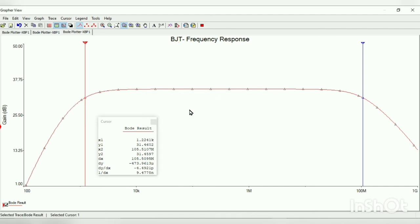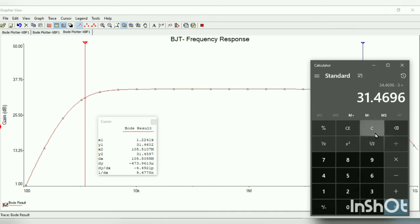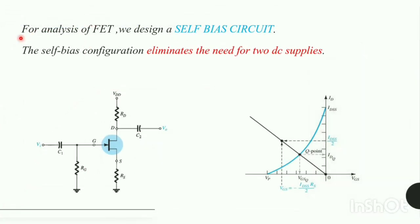Repeat the same for the next cursor. Now if you see, our low frequency is 1.2241 kHz and our high frequency is 105.5107 MHz. We know bandwidth equals high frequency minus low frequency. That is 105.51 minus - converting the kHz to MHz, we will get 0.0012. So we are obtaining 105.508.